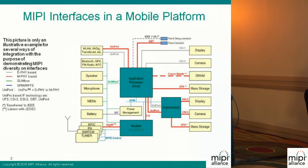Or, for example, having the application processor accessing the mass storage device via this interface — in that case the mass storage device would only be here. Other kinds of applications you can use UniPro for are wireless high-bandwidth communication, like wireless LAN, wireless Gigabit, or Transfer Jet, also using UniPro. This yellow box can also be a UniPro switch where each of these wireless interfaces is able to access, for example, mass storage or the display.